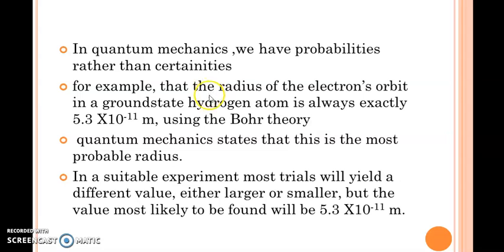For example, the radius of the ground state of hydrogen atom is given by the Bohr radius. According to Bohr model, it is 5.29 into 10 raised to minus 11 meters. In Bohr theory, it is a fixed value. But in quantum mechanics, it is the most probable radius.